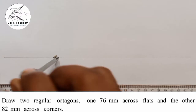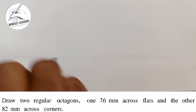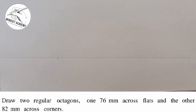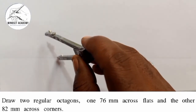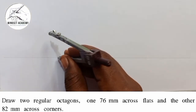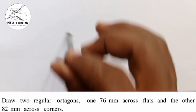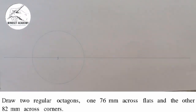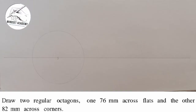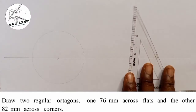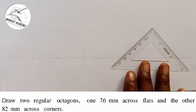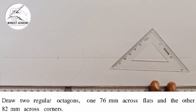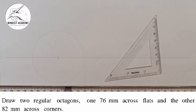Draw a circle — but just faint, because what we're looking for is the octagon, not the circle. Now, octagon deals with 45 degrees — that's the key difference from the hexagon which deals with 60 degrees. I'm going to use the 45-degree angle to draw this the same way I did the other one across flat.